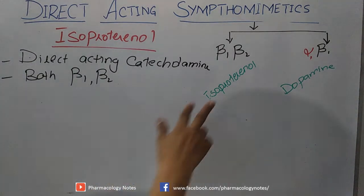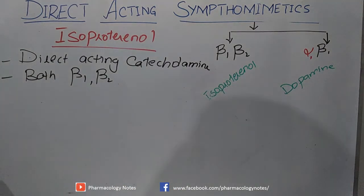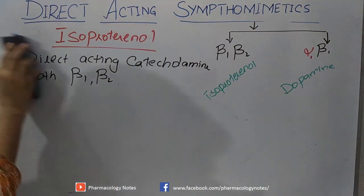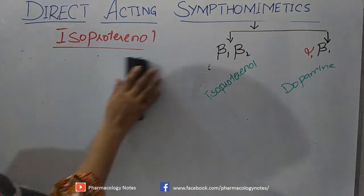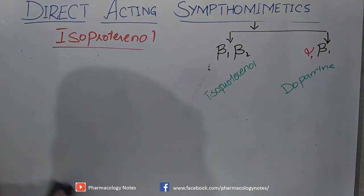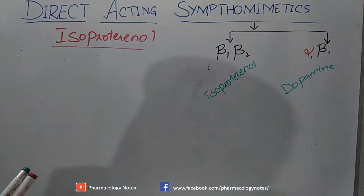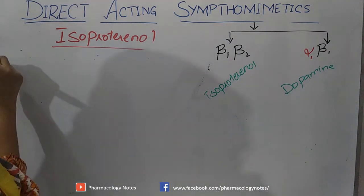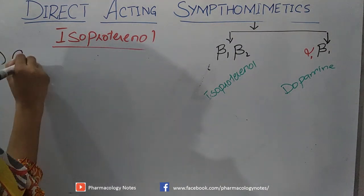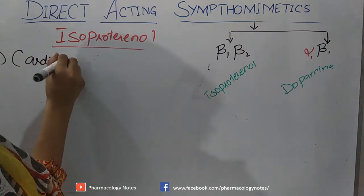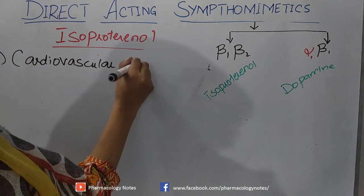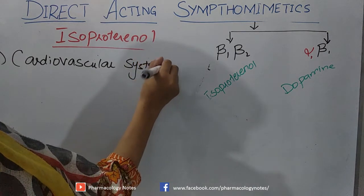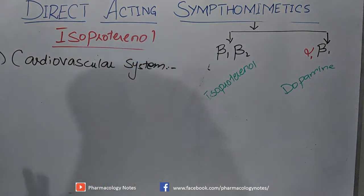On the heart we have Beta-1 receptors. Let's study the actions of isoproterenol. It is a direct-acting catecholamine — a drug which acts non-selectively on Beta-1 and Beta-2 receptors. Now let's look at its action on the cardiovascular system.